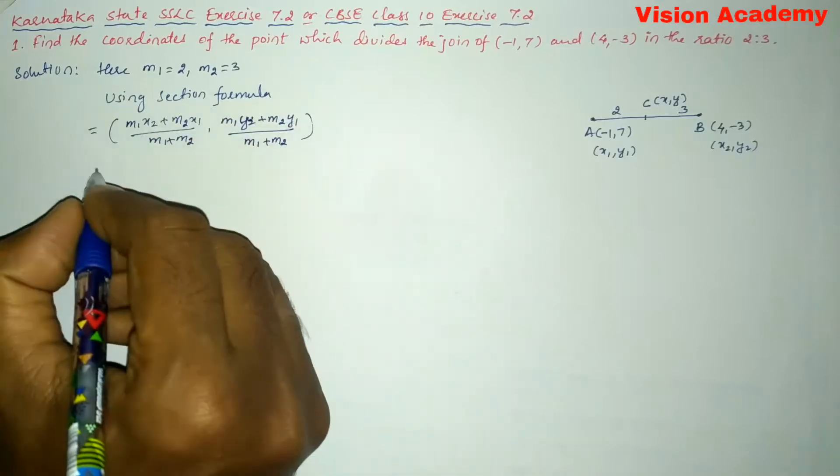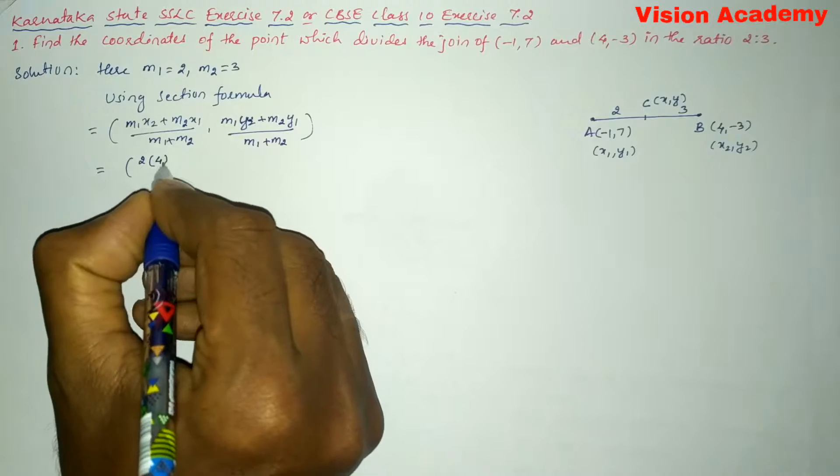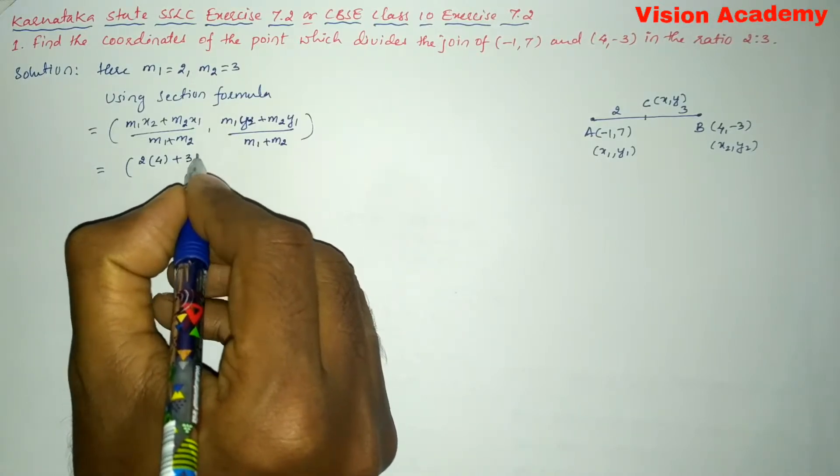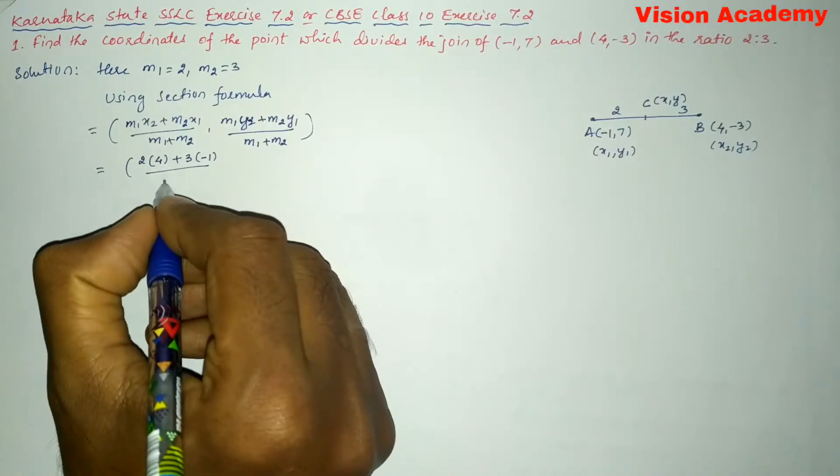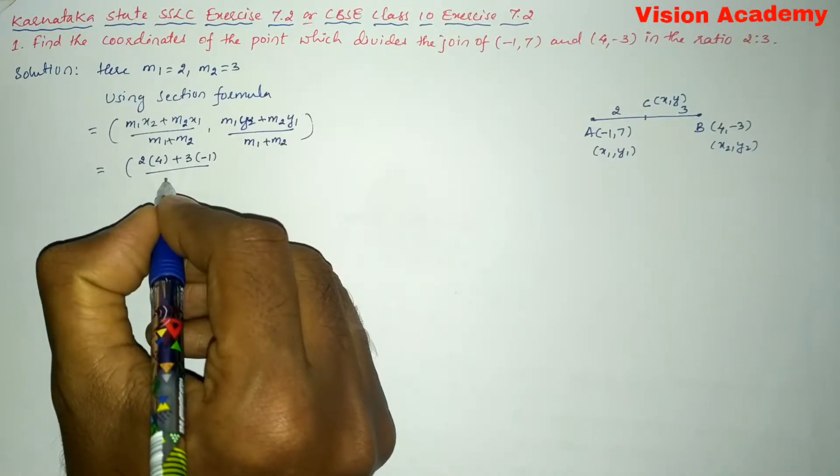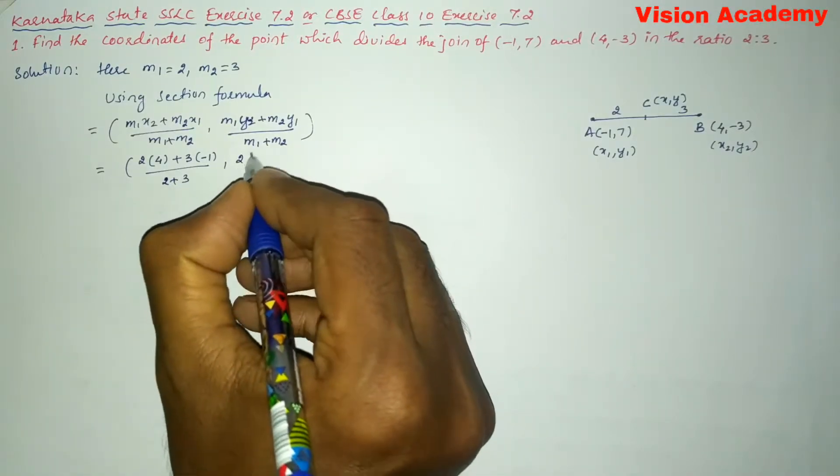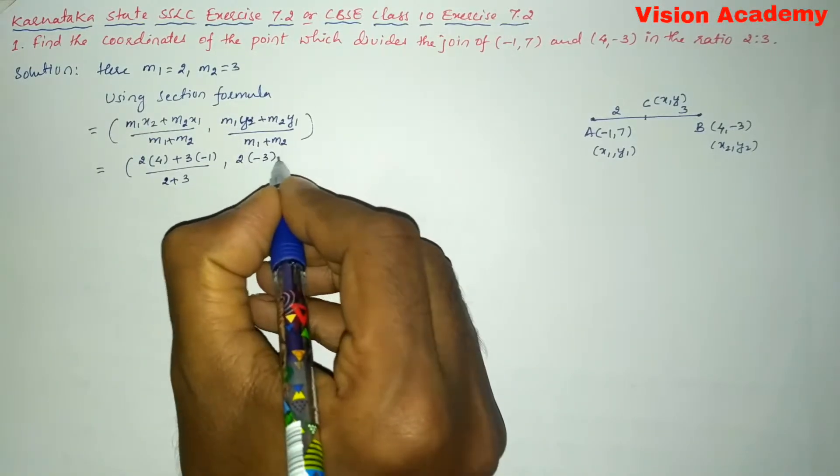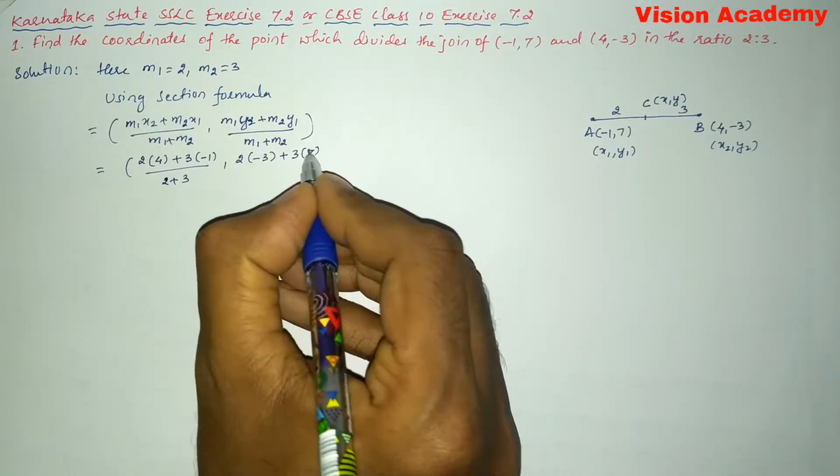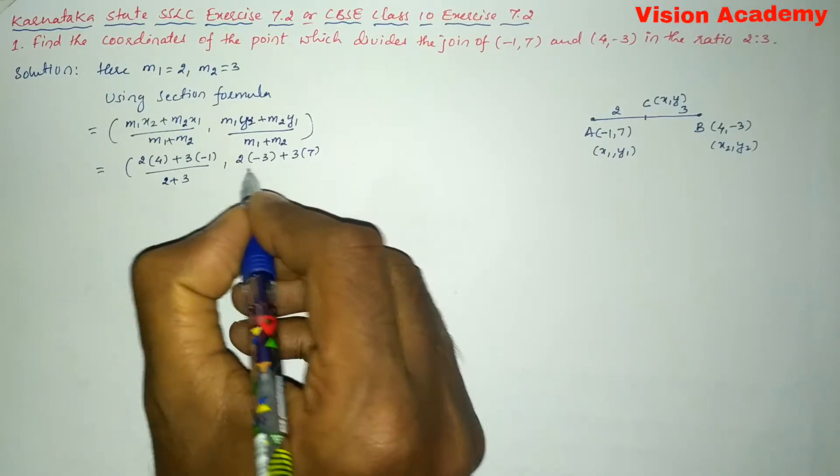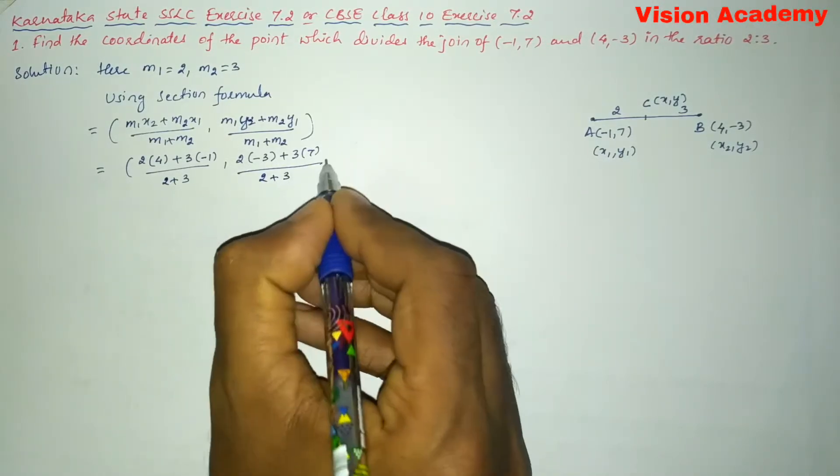Now, let us substitute here: M1 is 2 and X2 is 4 plus M2 is 3 and X1 is -1, whole divided by M1 is 2 plus M2 is 3. Here M1 is 2, Y2 is -3 plus M2 is 3 and Y1 is 7, whole divided by M1 is 2 and M2 is 3.